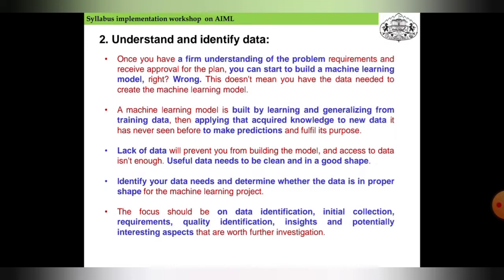The desired result or undesired result may both occur while training the model. The machine learning model is built by learning and generalizing from training data, then applying that acquired knowledge to new datasets it has never seen before to make predictions and fulfill its purpose.